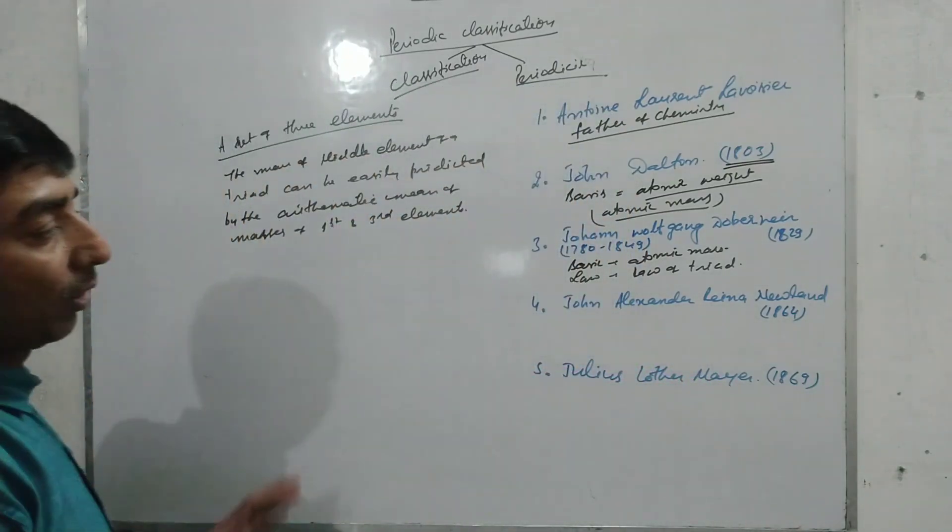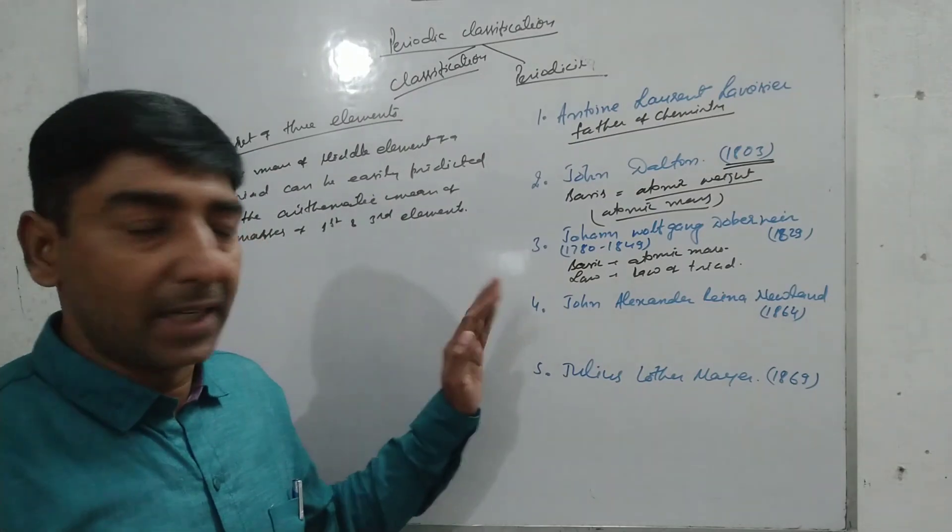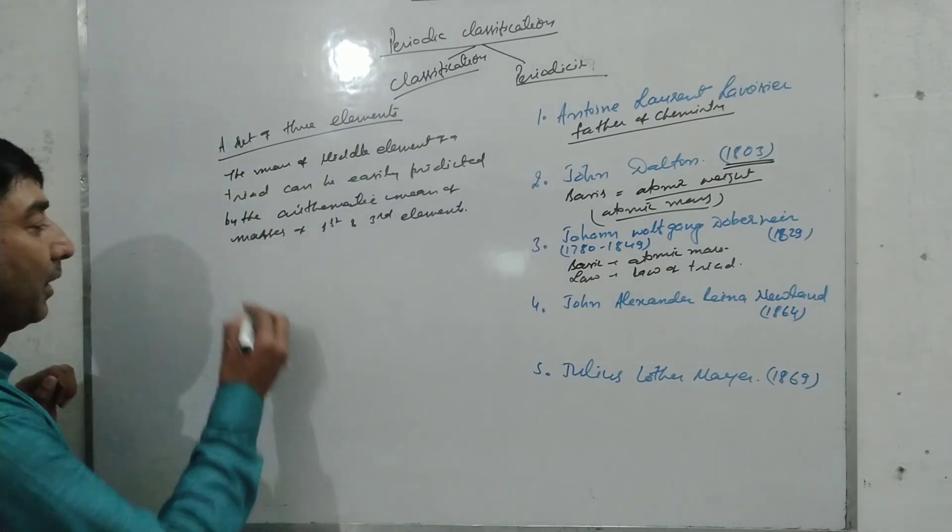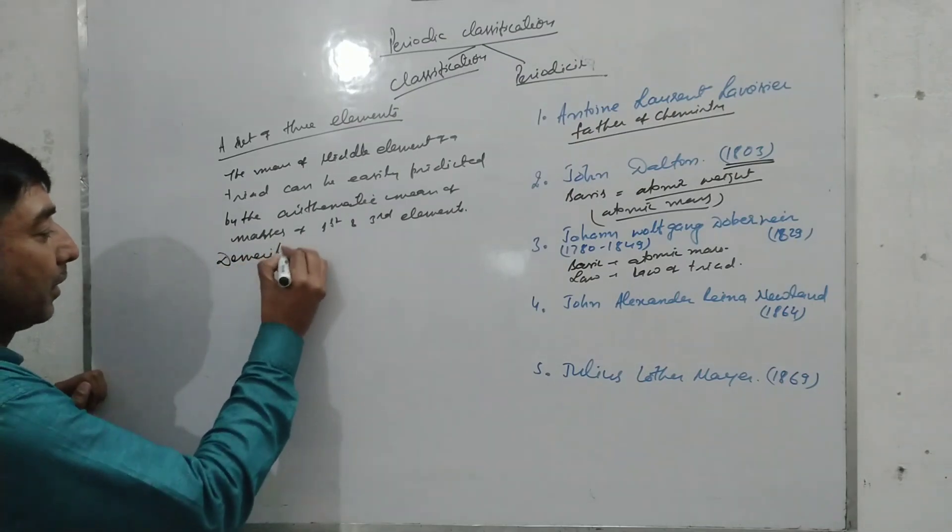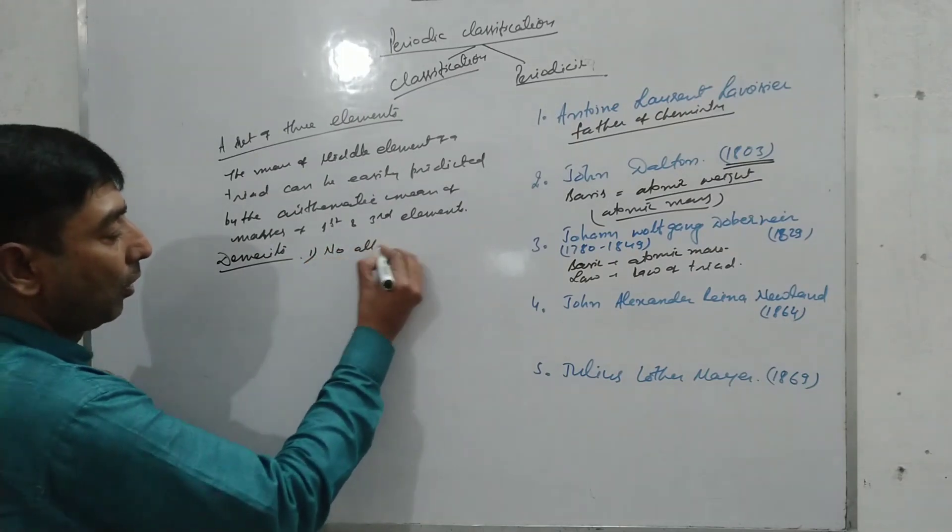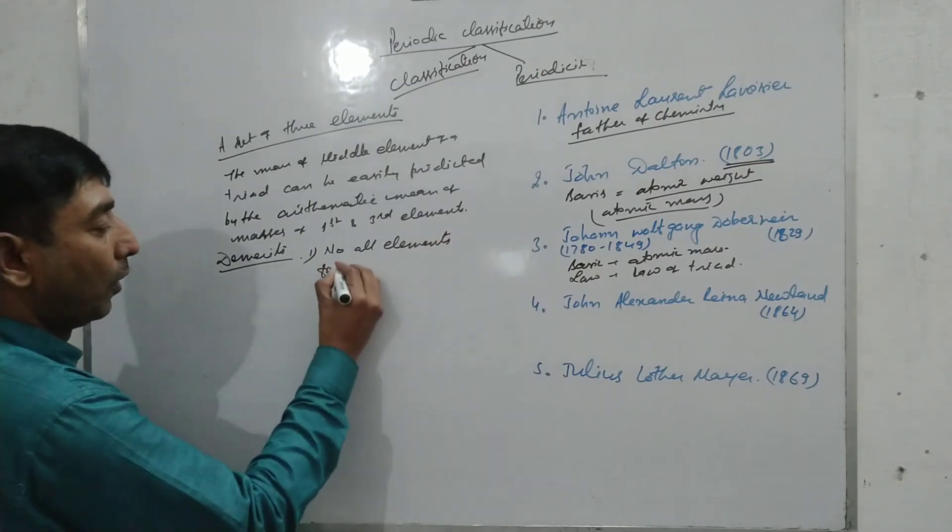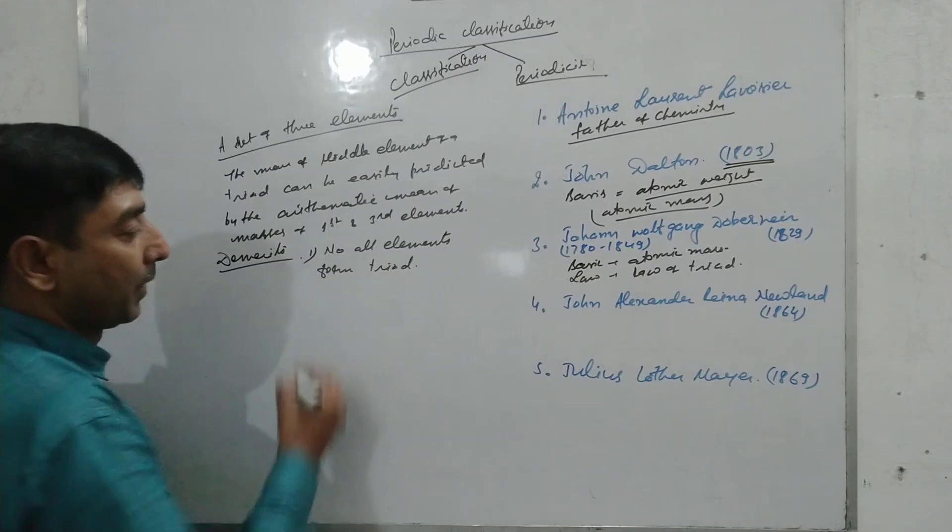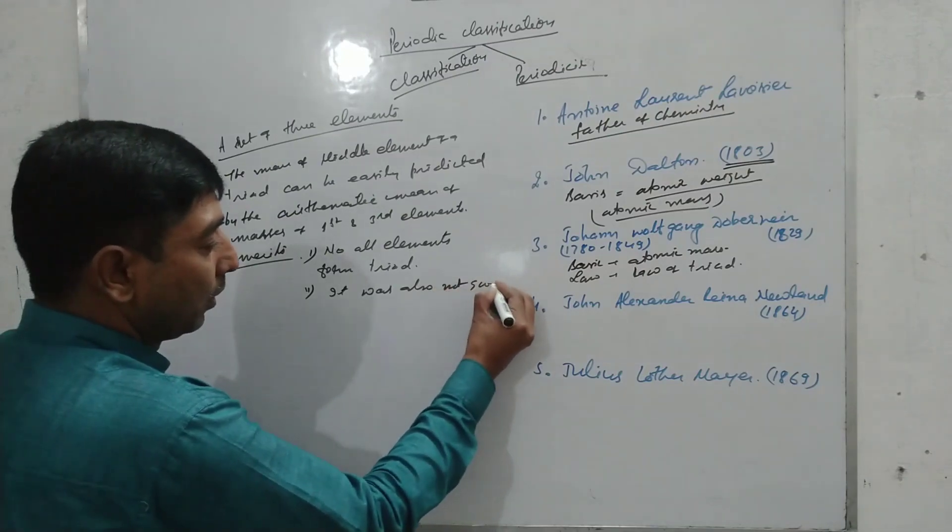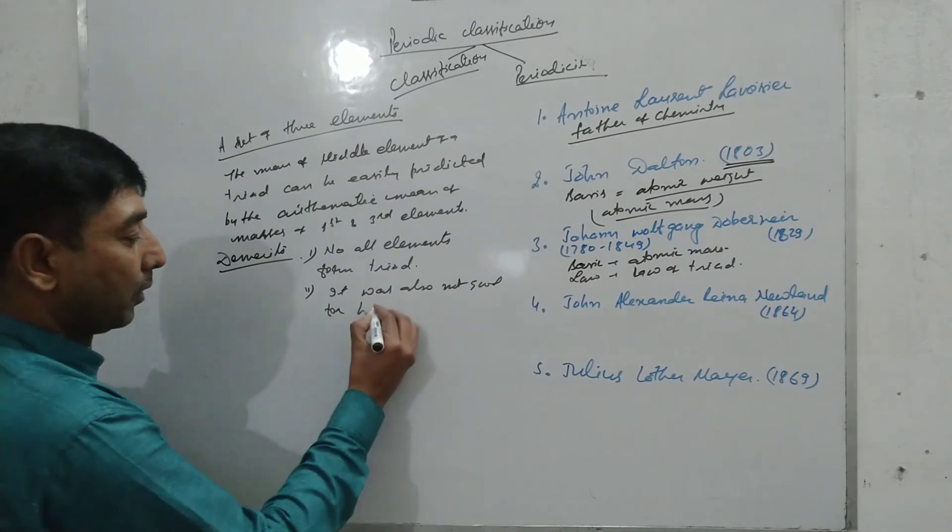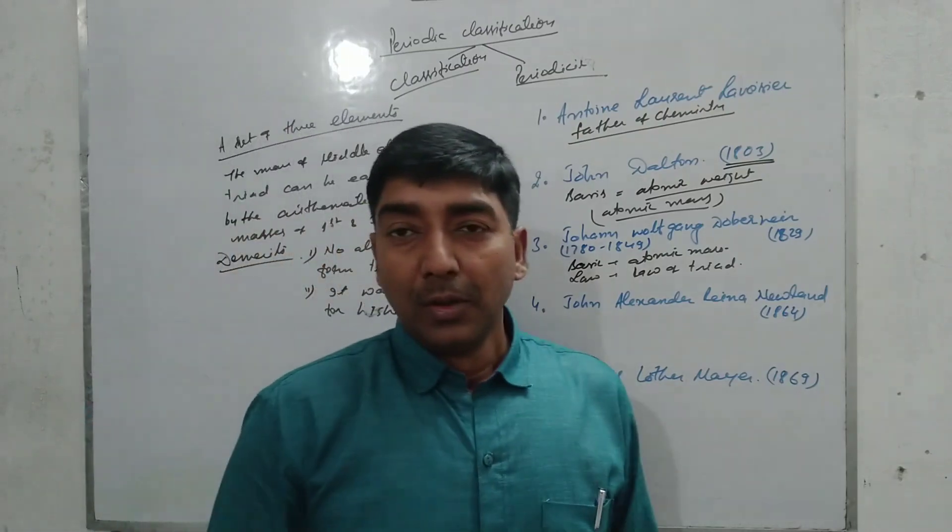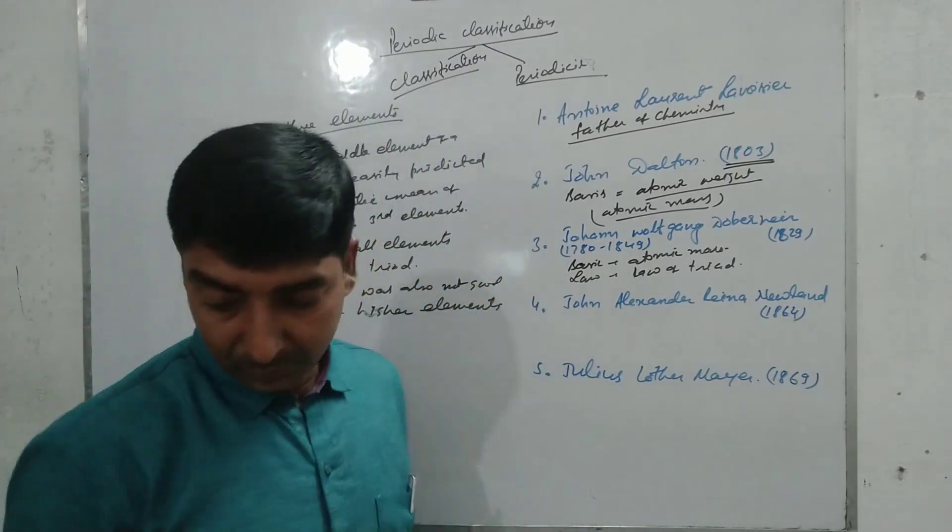This law was not sufficient to classify all the elements present at that time and future also, and that's why this classification is also discarded. Demerits: first, not all elements formed triads. Second, it was also not good for higher elements.